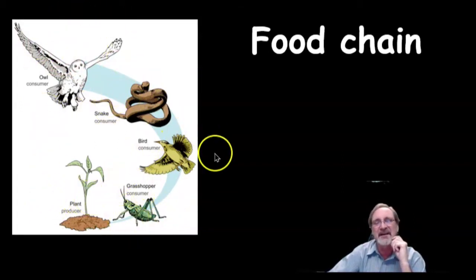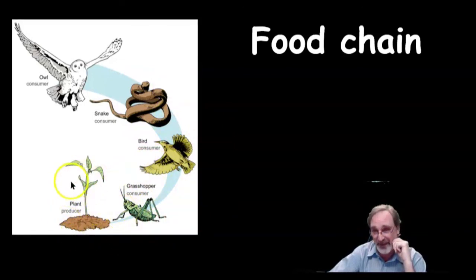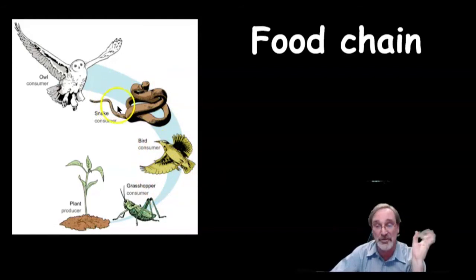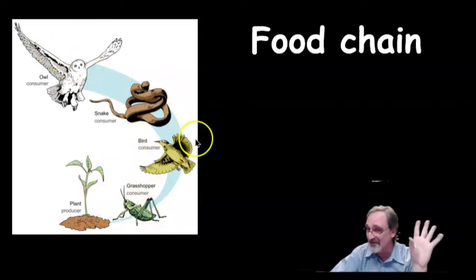So what you have is different levels here. This is the producer of the food, the plants, and then you have consumers - this is the first order consumer, this is the secondary consumer, this is the third order consumer, also called the tertiary consumer because it eats a consumer. This guy is an herbivore, and these guys are carnivores.